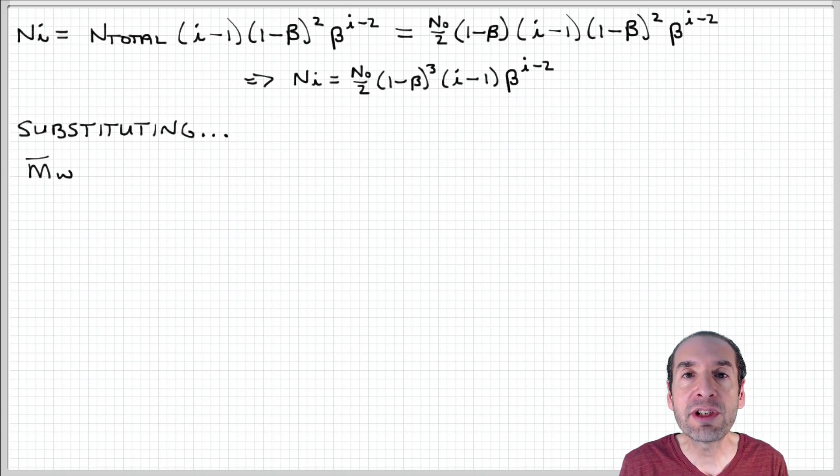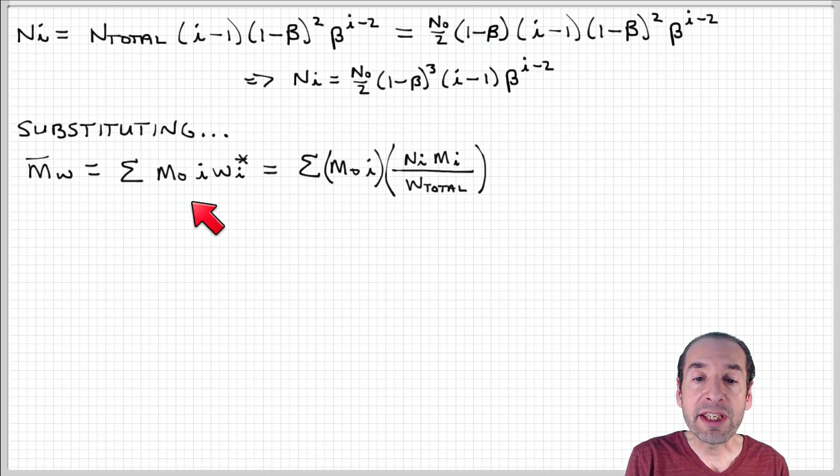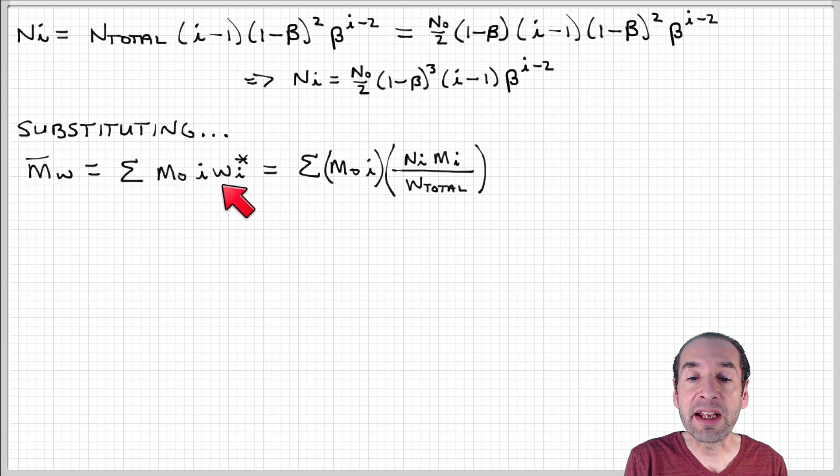Now we can substitute this into our expression for the weight average molecular weight. Remember we expressed that as the quantity M naught i times the weight fraction of polymers of length i, and if we expand that out, we have Ni, Mi over W total.